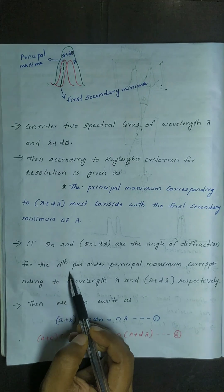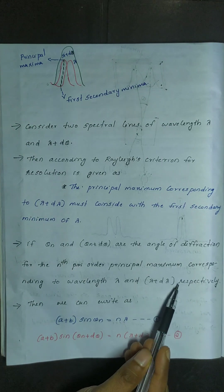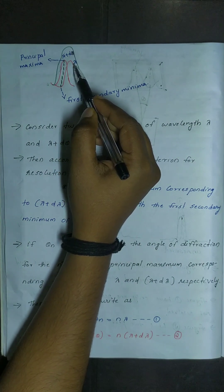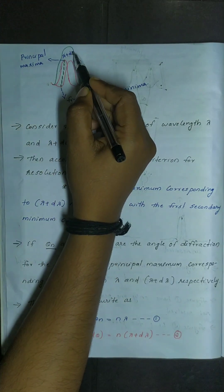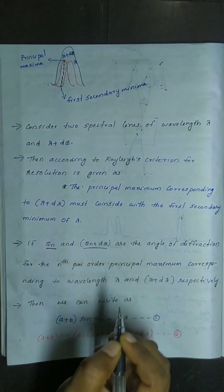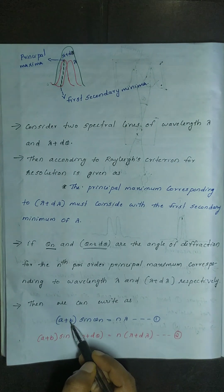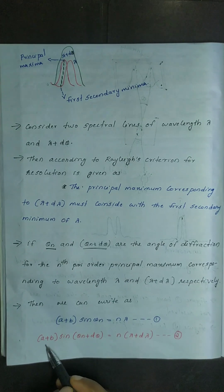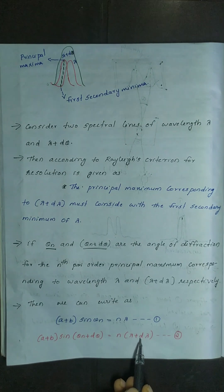For the nth order principal maximum corresponding to wavelengths lambda and lambda plus d lambda respectively, the diffraction angle for wavelength lambda is theta n. We write: (a + b) sin(theta_n) = n lambda, and (a + b) sin(theta_n + d theta) = n(lambda + d lambda).